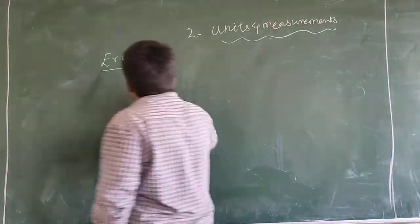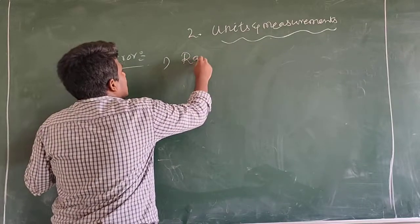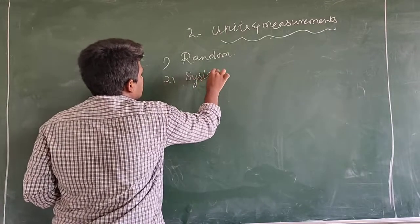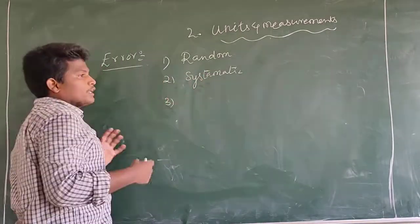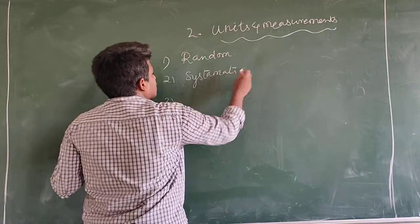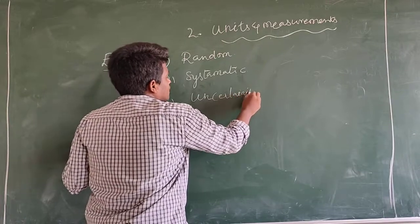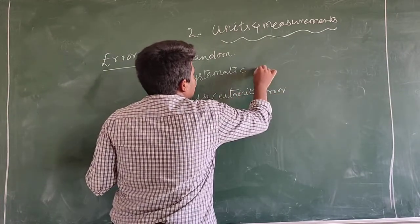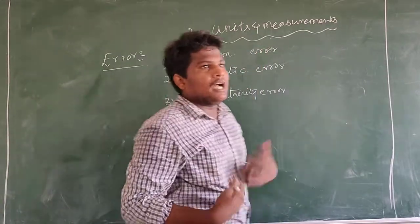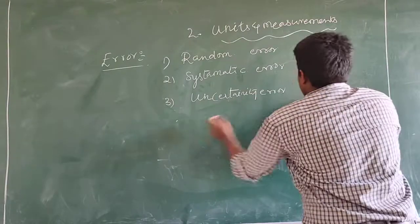There are three types of errors. First error is random error. Second one is systematic error. Third is uncertainty error. Random errors change randomly; systematic error only changes because of a common function. There will be three types of errors.